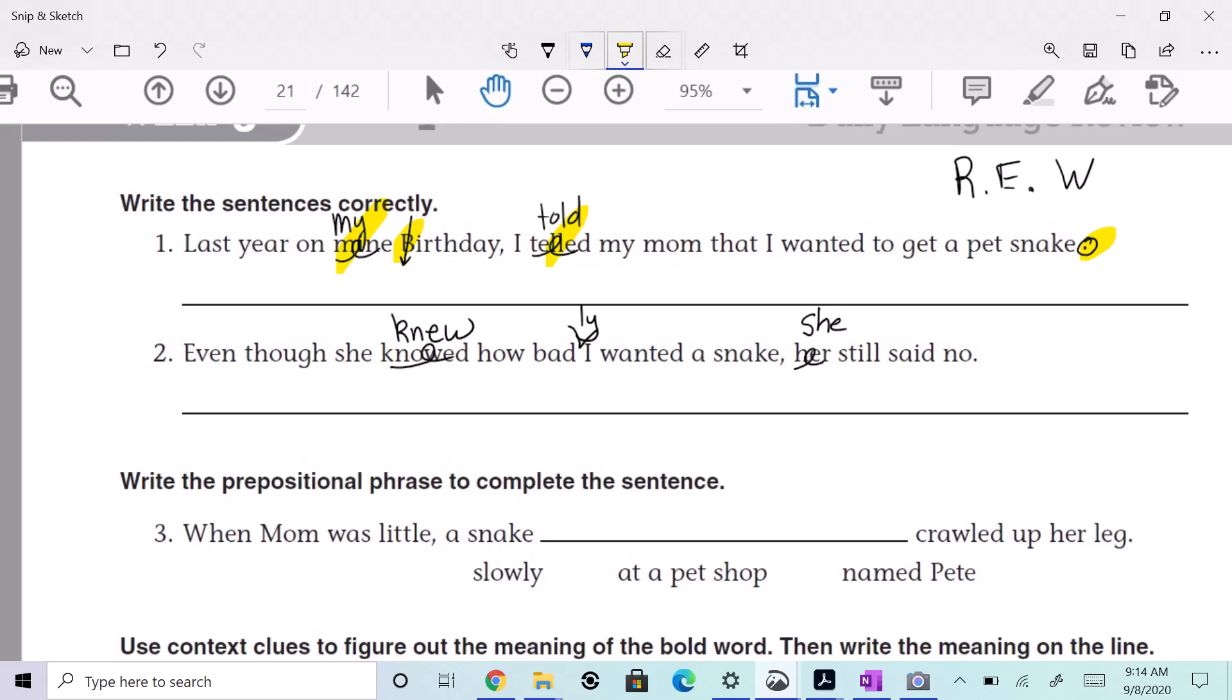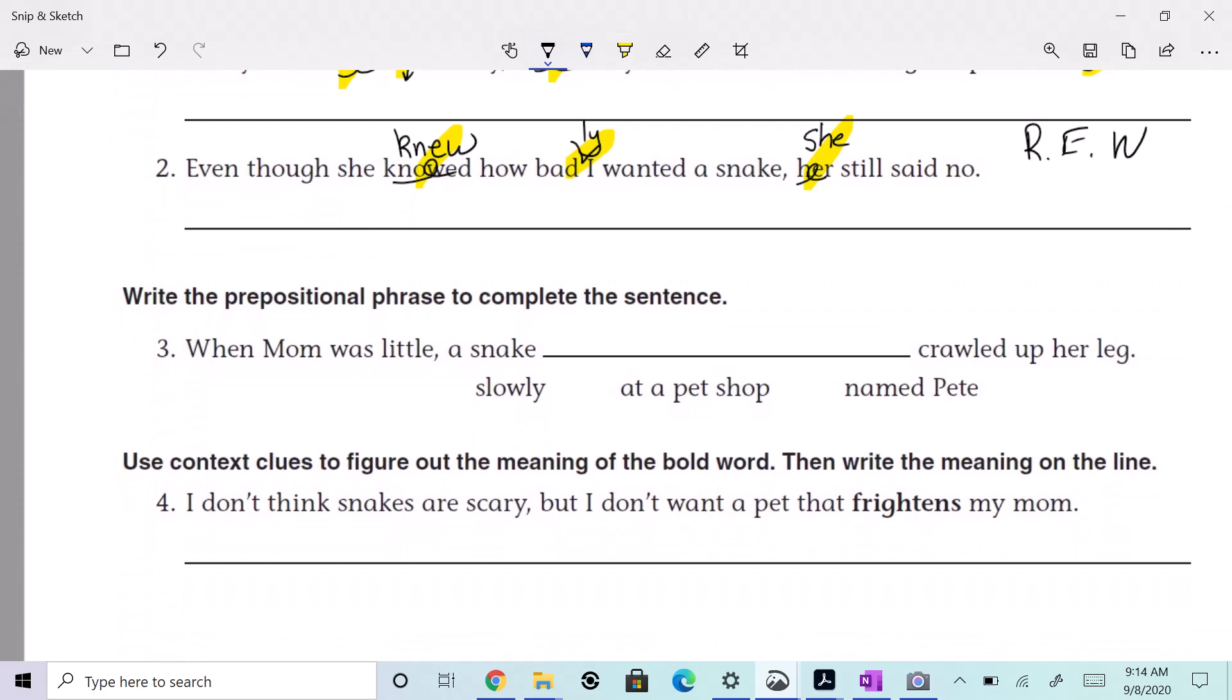she knew how badly I wanted a snake, comma, she still said no. All right, I think we're good there. Let's see how many we have. One, two, three corrections. Anybody see anything else? I think we're good. So on that one we did precisely this: we read, we edited, then we read, then we write it out. That's very important. You ready? Write the prepositional phrase to complete the sentence.